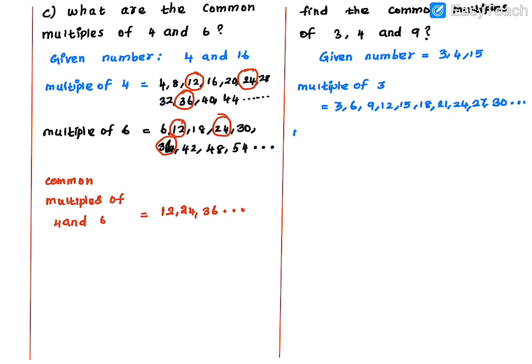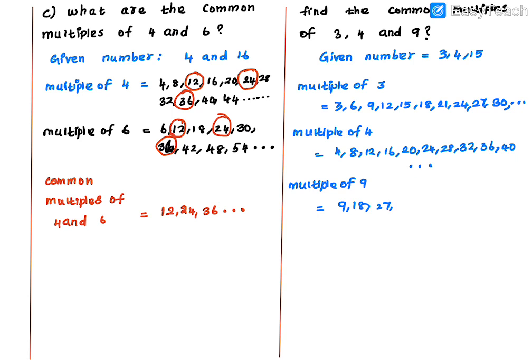Next, write multiples of 9: 9, 18, 27, 36, 45, 54 — and it goes on continuously. You can write up to 30 or 50 for each list.